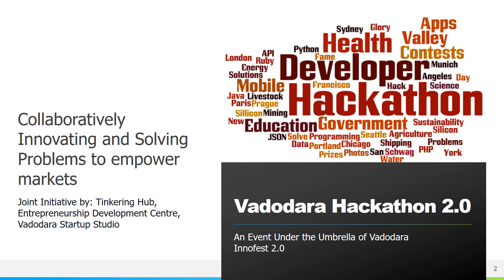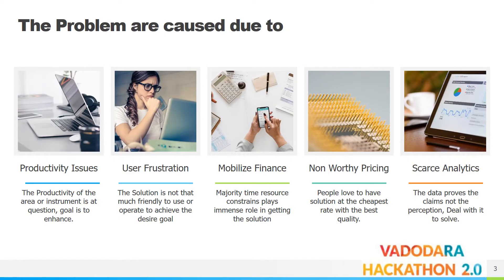This is the event where you can begin your innovation journey. Let me brief you on what the major problems are. There are five: first, productivity issues; second, user frustration; third, mobile finance; fourth, non-worthy pricing; and fifth, sparse analytics. Productivity issues means the productivity of an area or instrument is in question and enhancing it is the goal.